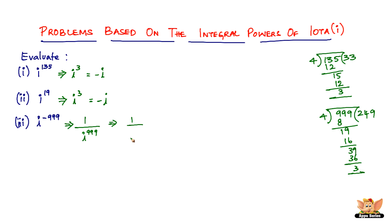So we have 1 divided by i cube, which can be written as i divided by i to the power 4. Now i is nothing but just write it as i. Don't write it as square root of minus 1. Now i to the power 4 is nothing but just 1. So i divided by 1 is i. Therefore i to the power of negative 999 gives you i.